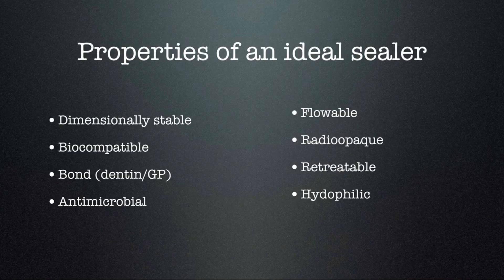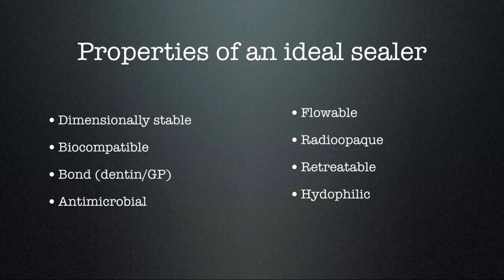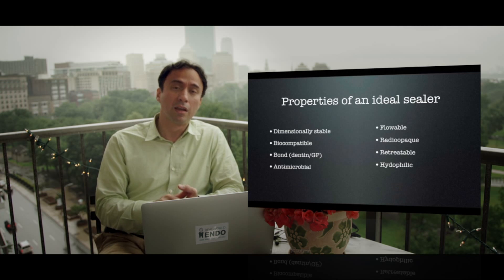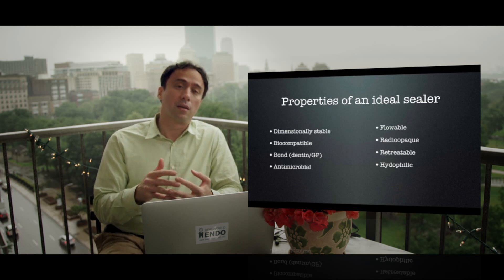So the question is why? Well, it's because based on the properties that Dr. Grossman described as the properties of an ideal sealer — which included dimensional stability, biocompatibility, bond to both dentin and gutta-percha, antimicrobial properties, flowability, radio-opacity, retreatability, and hydrophilic qualities — none of the sealers, zinc oxide eugenol and resin-based sealers available at his time, fulfilled these requirements.